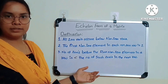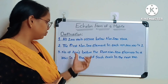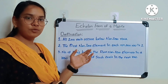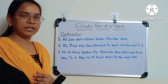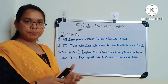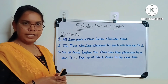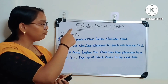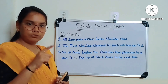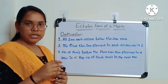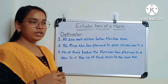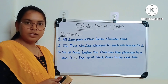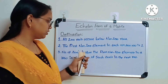Before we start, let's go through the definition of echelon form, or you can say the steps we need to follow for solving the echelon form matrix. Whenever a given matrix is asking to find the rank using echelon form, we have to know how an echelon form matrix looks and what conditions it follows. For that, we need to know these steps.